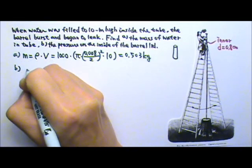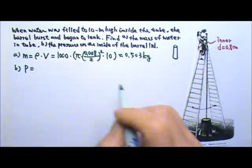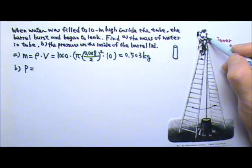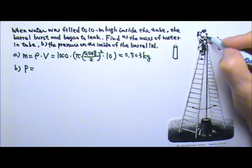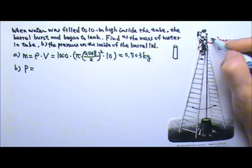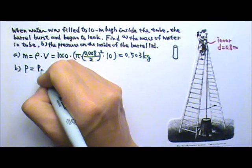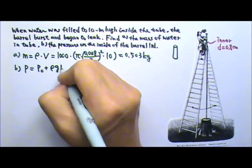Part B. The pressure on the inside of the barrel lid. On the surface of the water, it is exposed to the atmosphere. So on the top, we have atmospheric pressure, and then we have the ρgh of the water column. So the pressure on the inside of the barrel lid would equal to P₀ plus the ρgh of the water.